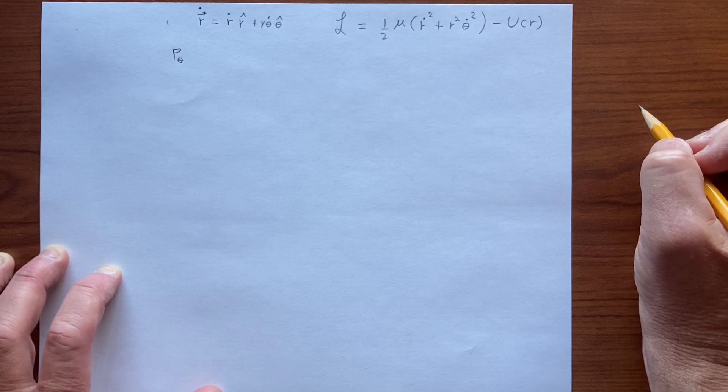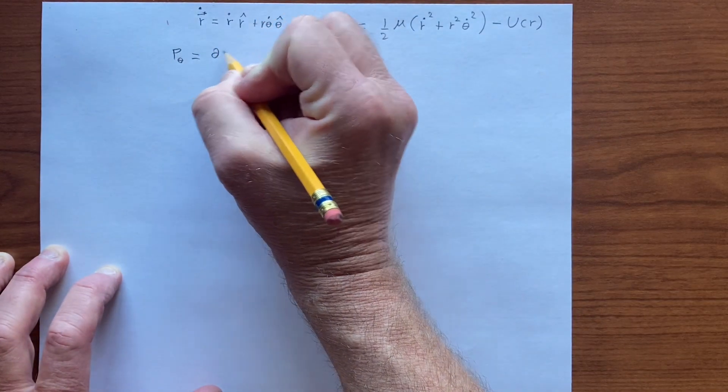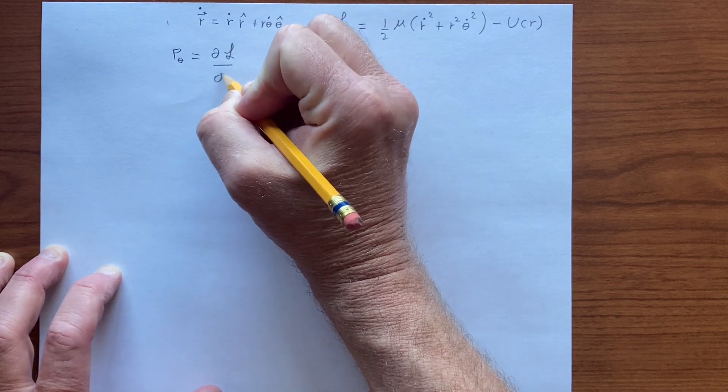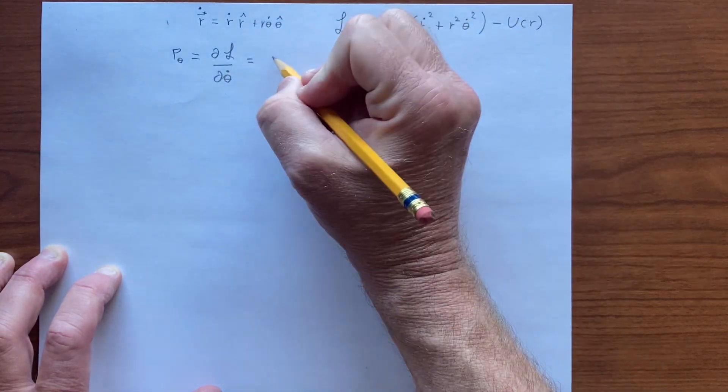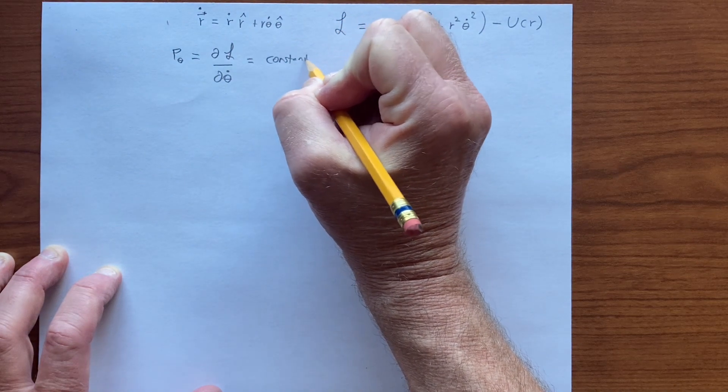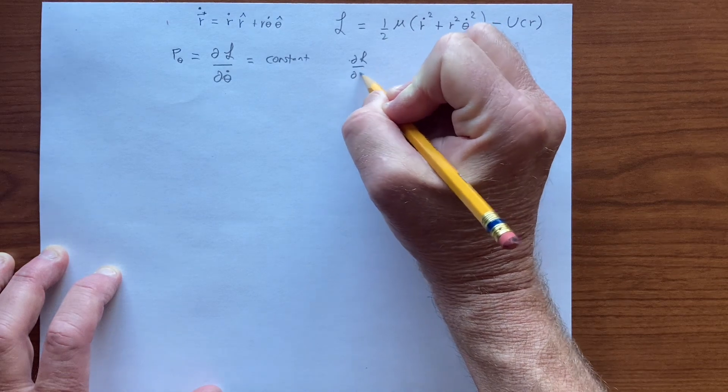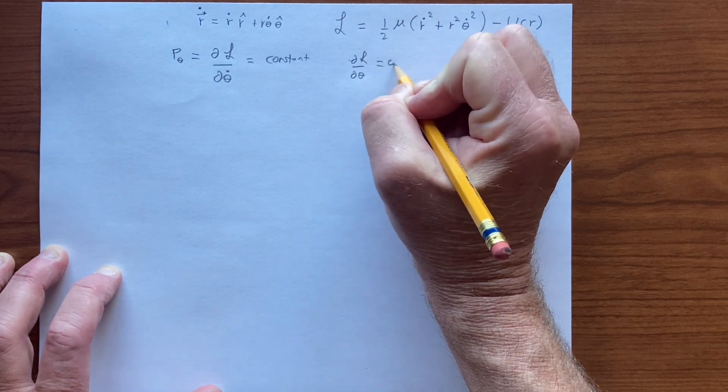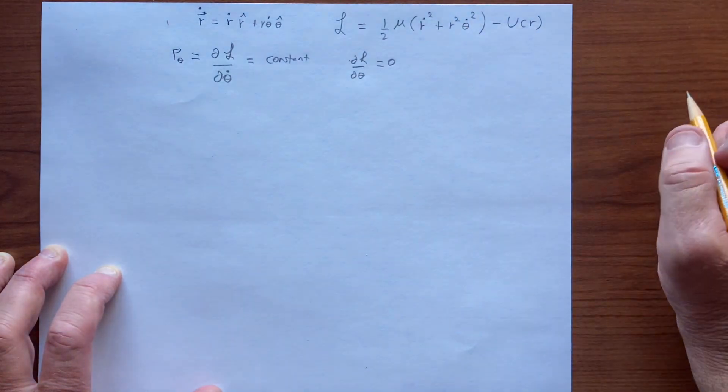theta, a theta momentum, which is dl by d theta dot, which is a constant due to the fact that dl by d theta is zero. There's no direct theta dependence there.